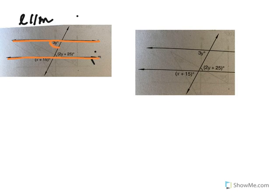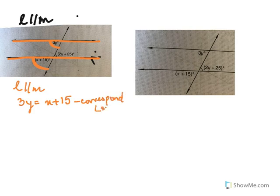In this case, this angle will be equal to this angle, so we write that out. L parallel to M, so 3y will be equal to X plus 15 because they're corresponding angles. But here we can't go ahead because we do not know X nor do we know Y.